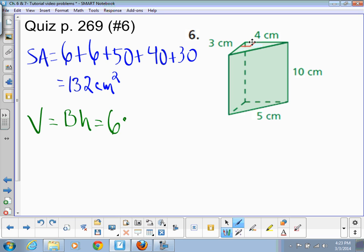So if the base is right here or here, the height must come off of it. So 6 times 10 makes 60, and this is centimeters cubed. Done.